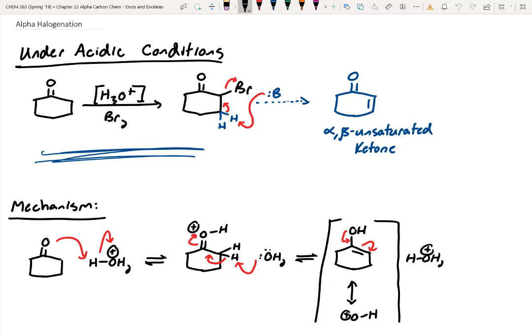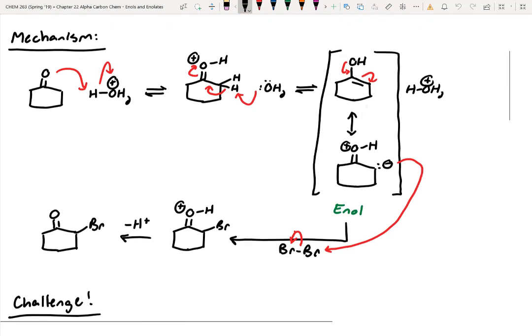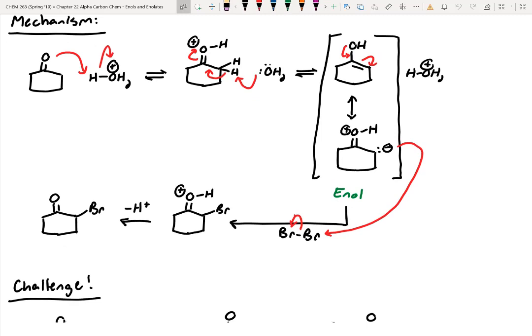Okay, so on Tuesday we finished up talking about alpha halogenation. We said that you can form an enol by treating a ketone or aldehyde with acid or catalytic base, and then that enol can react with elemental bromine. If you keep pushing this, you can actually get it to go more than once.